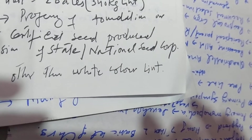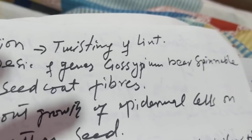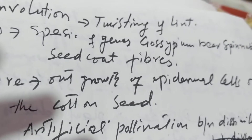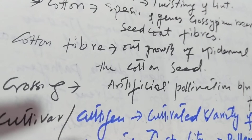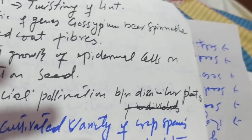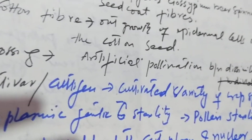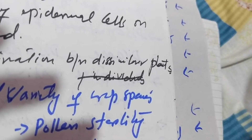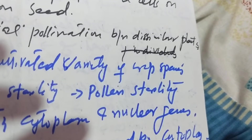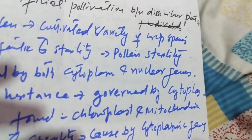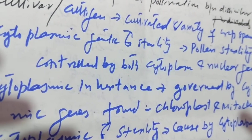Convolution is the twisting of lint. Cotton is species of the genus Gossypium bearing spinnable seed coat fibers, whereas cotton fiber is an outgrowth of epidermal cells on the cotton seed. Crossing is artificial pollination between dissimilar plants.